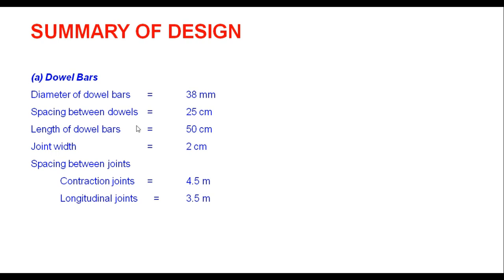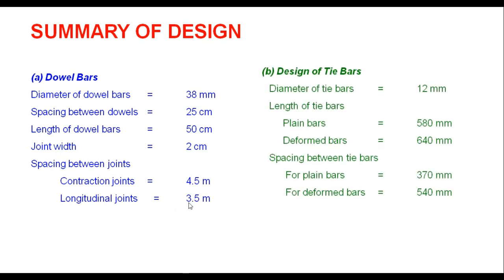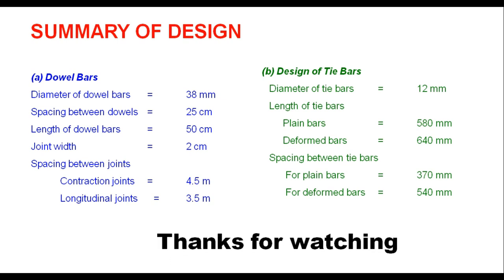Summarizing the design: dowel bar diameter = 38 mm, spacing = 25 cm, length = 50 cm, joint width = 2 cm, spacing between contraction joints = 4.5 m, and longitudinal joint = 3.5 m. For tie bars: diameter = 12 mm; for plain tie bar, length = 580 mm; for deformed bar, length = 640 mm. Spacing between tie bars is 370 mm for plain bars and 540 mm for deformed bars. That is how dowel bars and tie bars are designed in a concrete pavement. Thanks for watching.